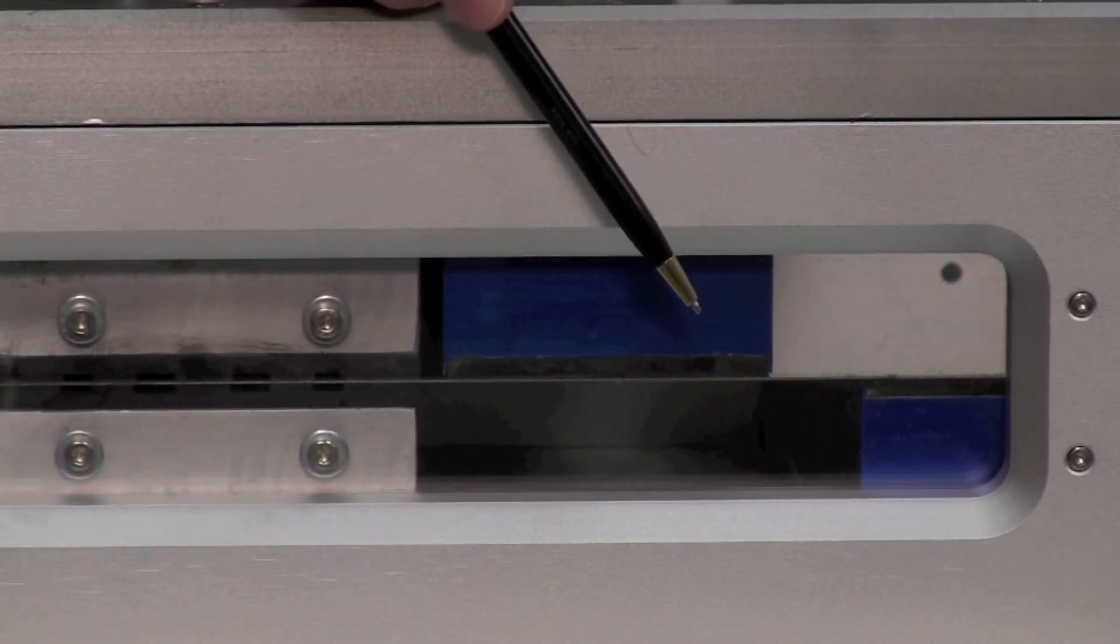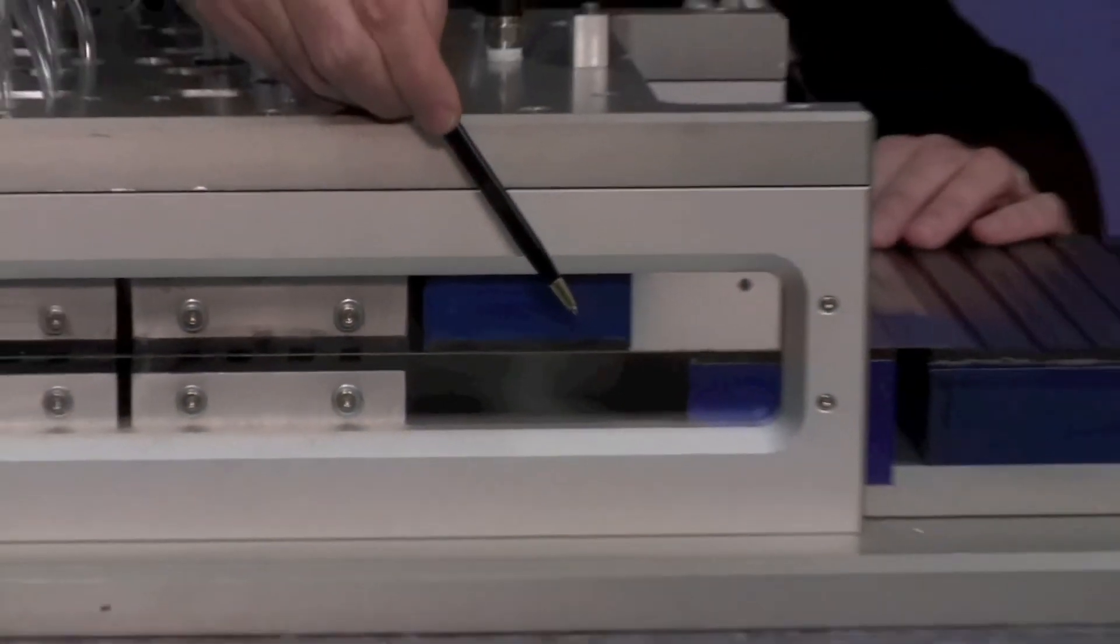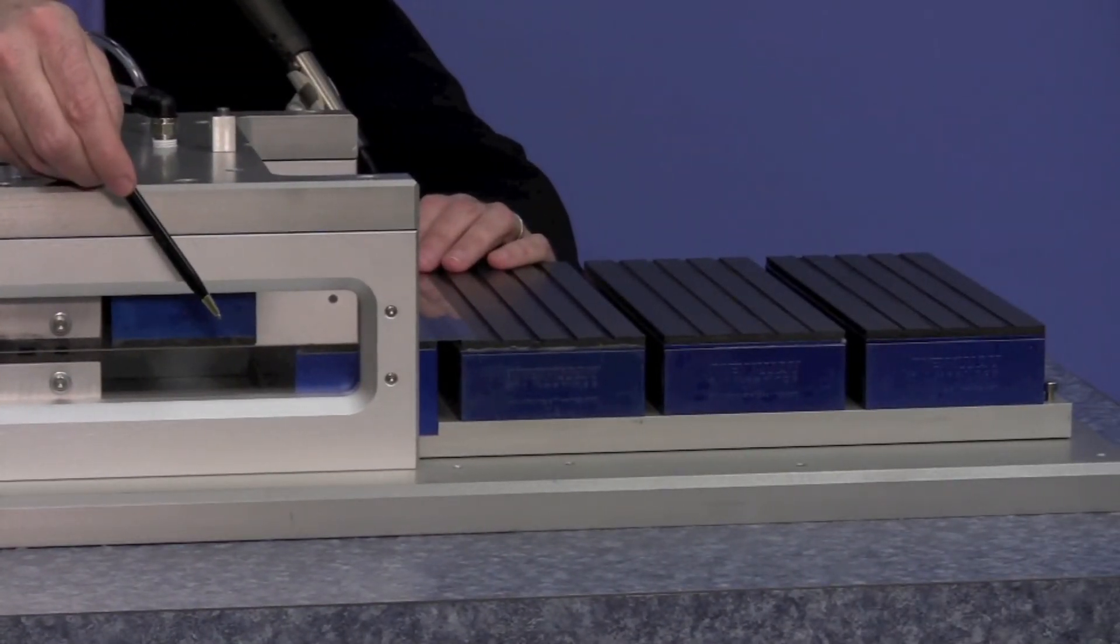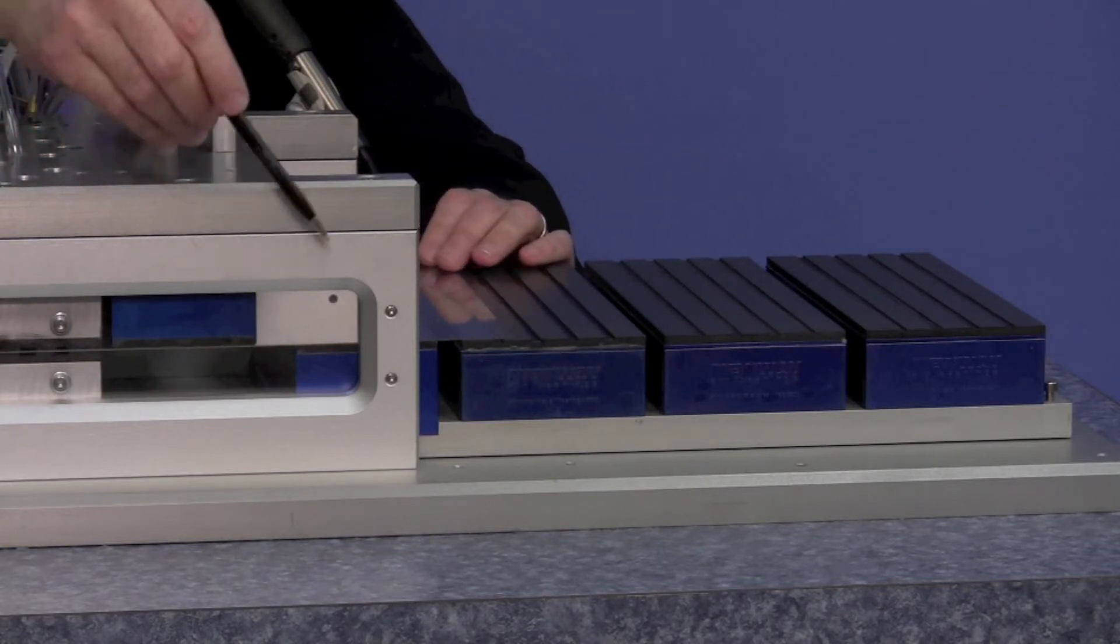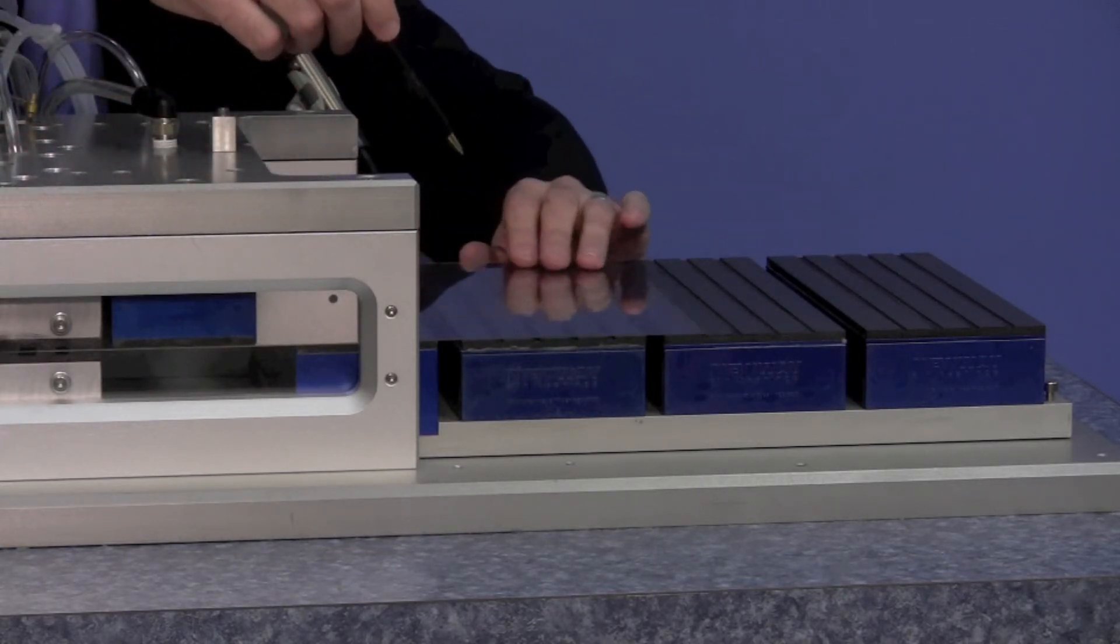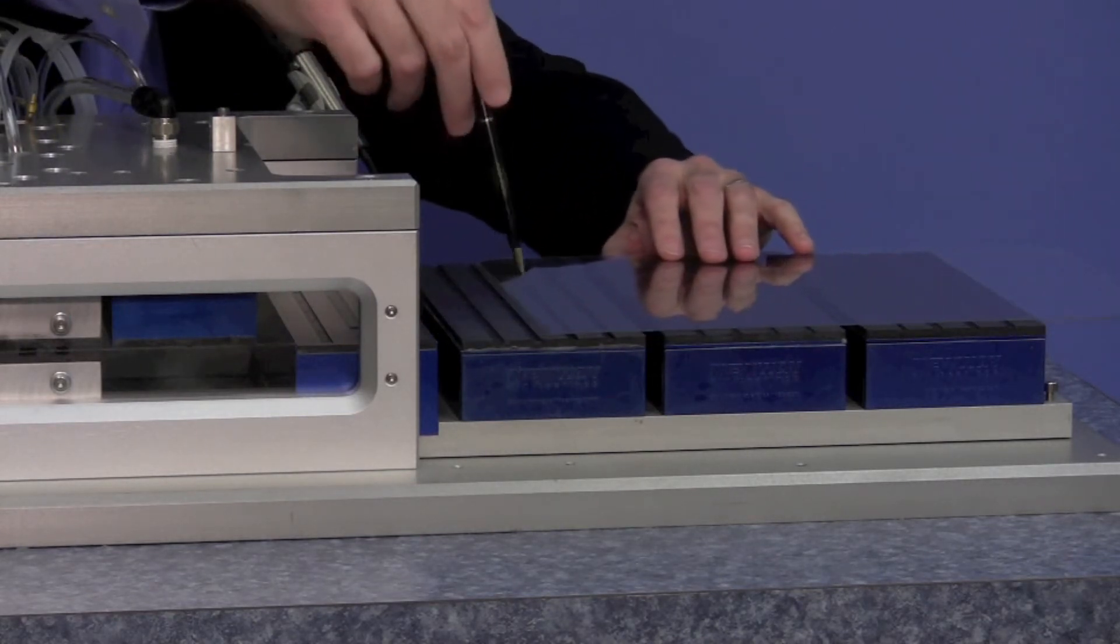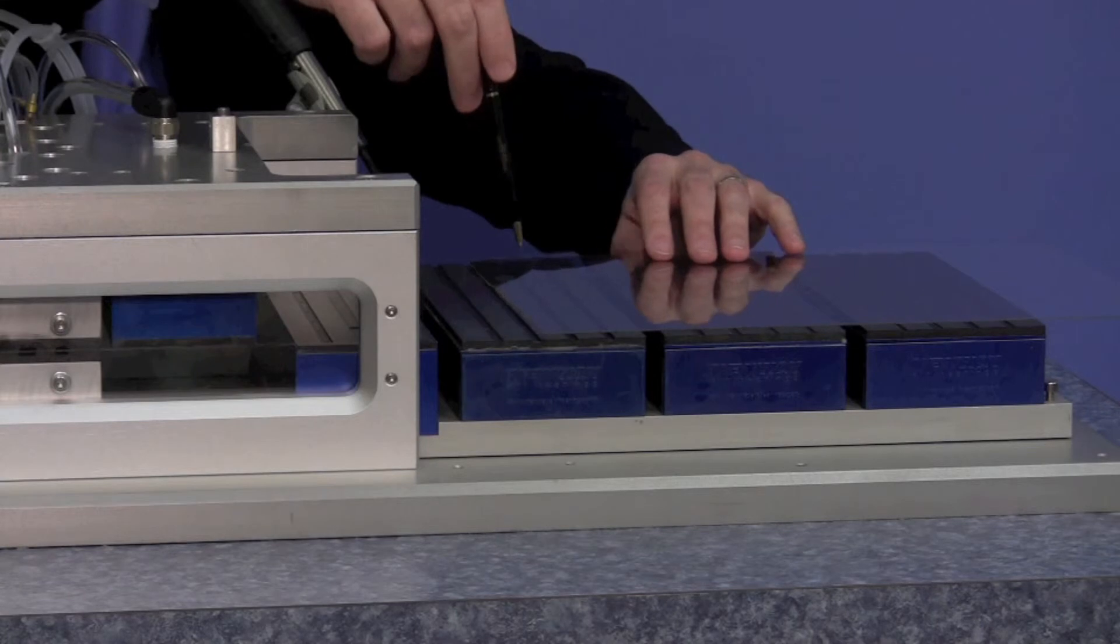After the precision coating operation or the lithography process or the printing process or the inspection process, whatever this process may have been, the glass then exits to a set of air bars that again have got vacuum grooves but in this case they are perpendicular to the motion of the glass.